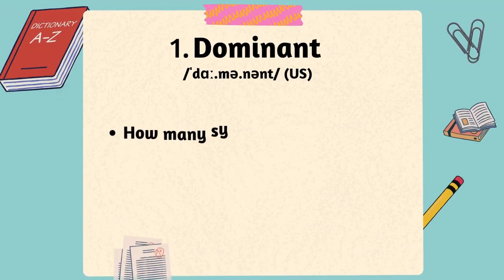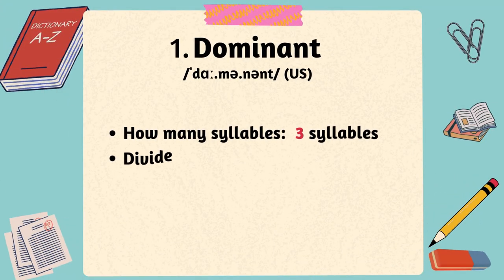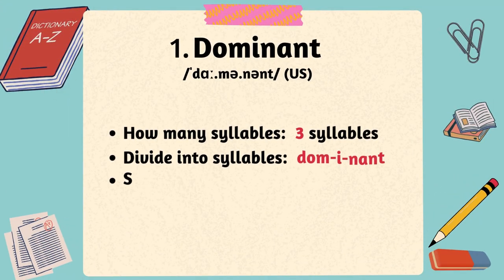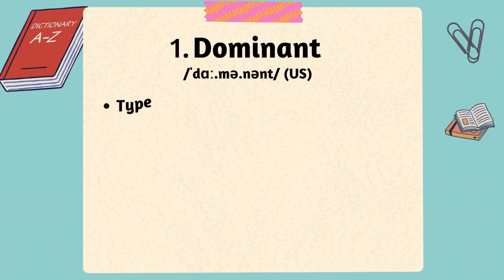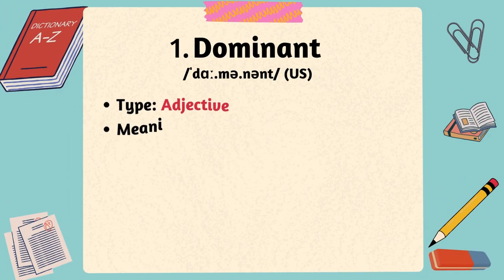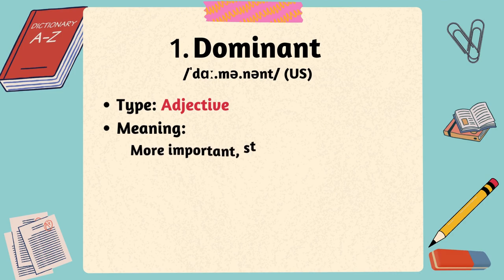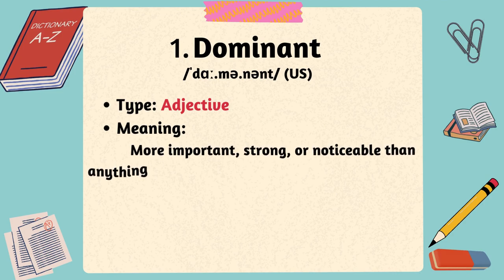The first word is dominant. The word dominant has three syllables, with the stress on the first syllable. Dominant is an adjective, and it is used to describe something or someone that is more important, strong, or noticeable than anything else of the same type.